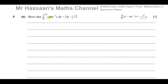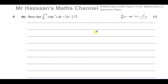Here we have to integrate between the limits of 0 and root 3 the product of two functions which are not related in terms of one being a function inside the other. It's not the case where differentiating the inner function gives what's multiplying it — that would let us reverse the chain rule — so we cannot do that here. Instead, we can use integration by parts.